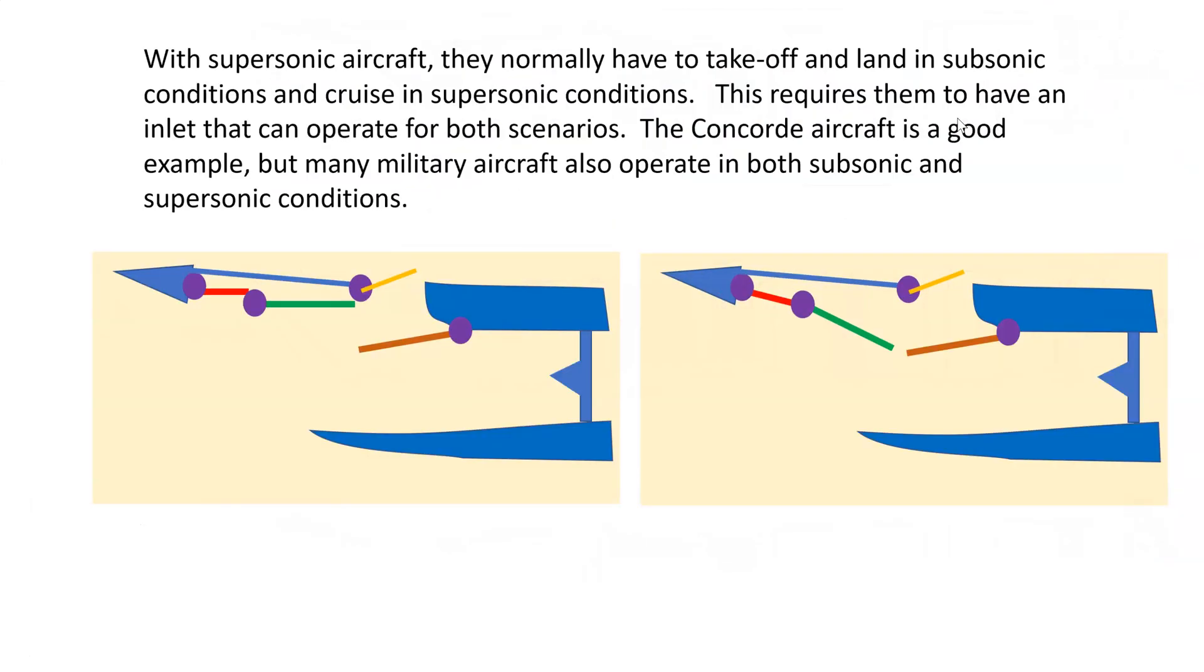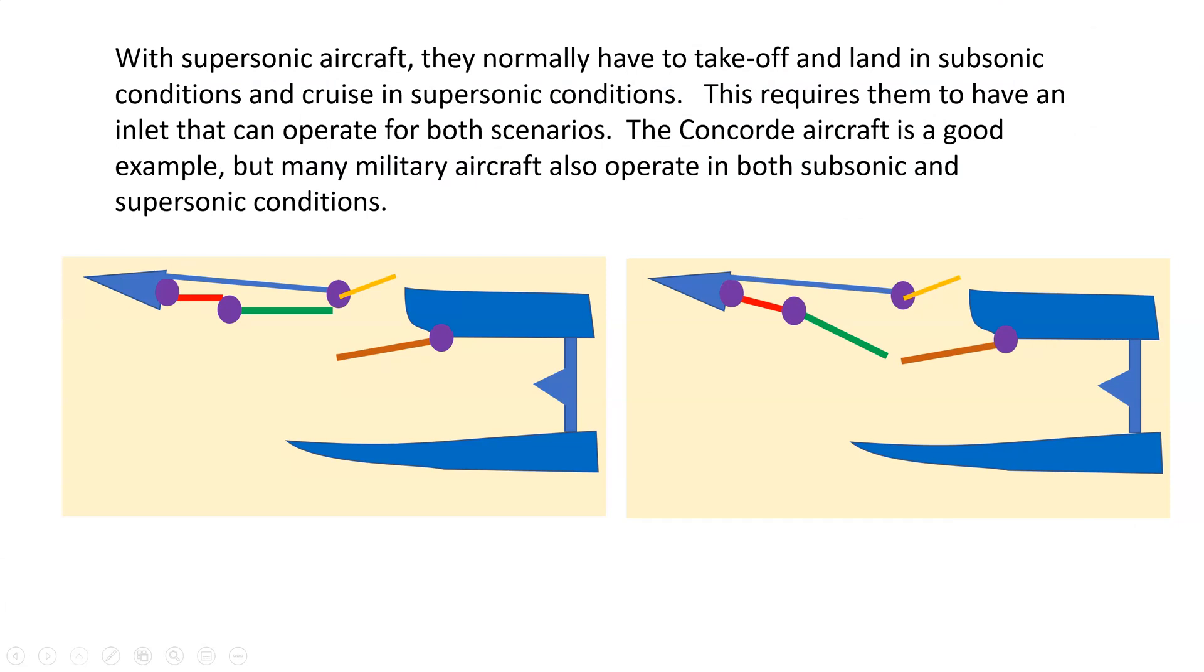Now, some aircraft, such as the Concorde, they fly at supersonic speeds, but when they're taking off and landing, then they need to be at subsonic speeds. Similarly with military aircraft. So how do they do that? Well, they have a variable geometry intake. And they vary the geometry of the intake using these ramps. So they have rams here that will control the position of the ramps.